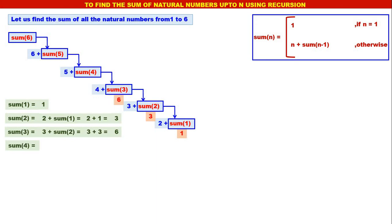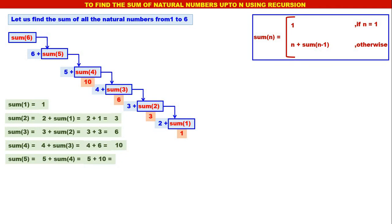What is sum of 4? It is 4 plus sum of 3. But sum of 3 is 6, therefore 4 plus 6 equals 10. What is sum of 5? It is 5 plus sum of 4. But sum of 4 is 10, therefore it is 5 plus 10, which equals 15. Last, sum of 6 is 6 plus sum of 5. But sum of 5 is 15, therefore 6 plus 15 equals 21. Therefore, sum of 6 is 21.